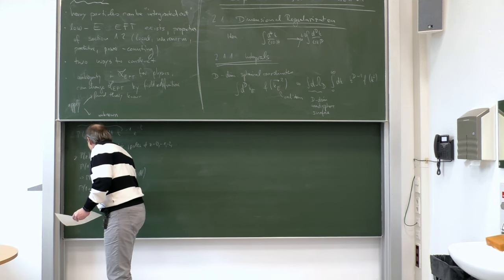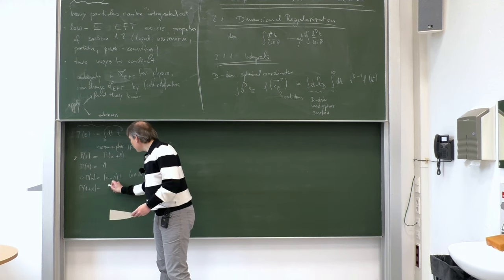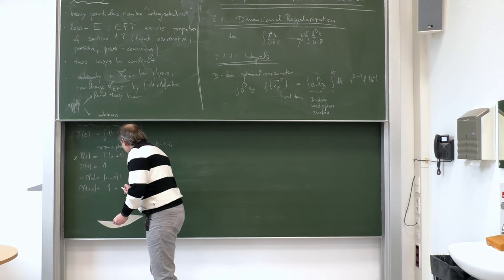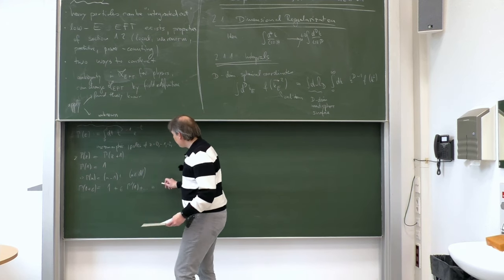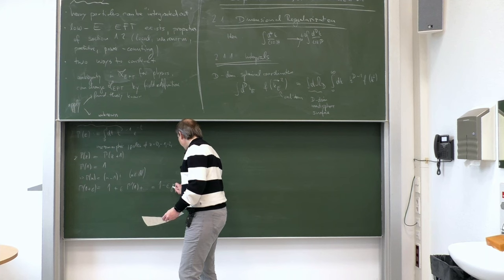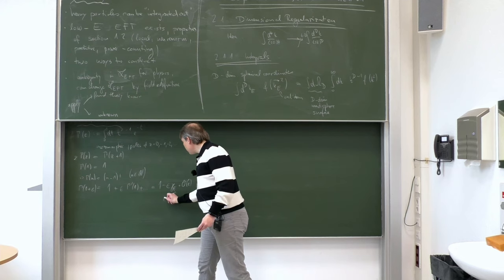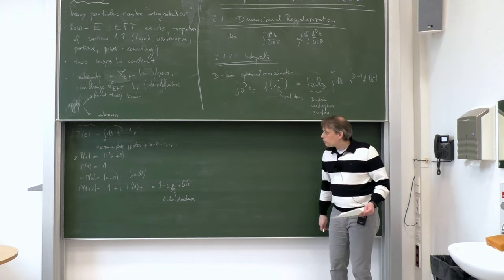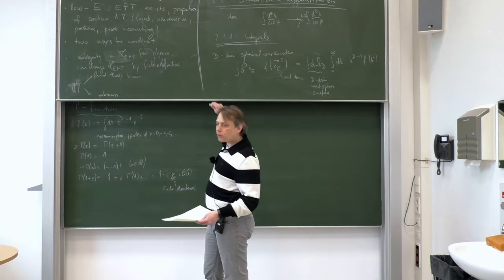An important Taylor expansion: Γ(1+ε) = 1 + ε·Γ'(1) + higher orders. The derivative at 1 is negative and is called minus γ_E, the Euler-Mascheroni constant, which is an irrational number approximately equal to 0.5774. So Γ(1+ε) ≈ 1 − ε·γ_E + O(ε²).